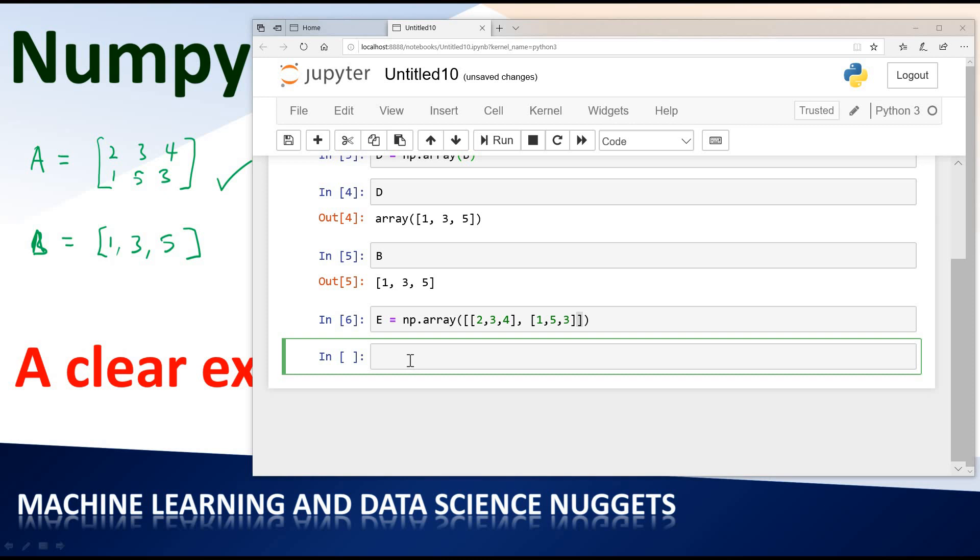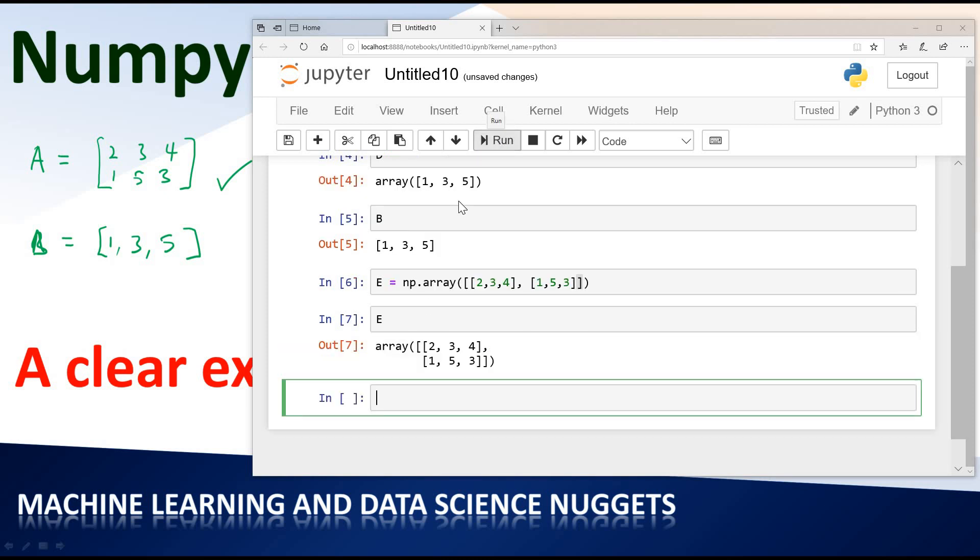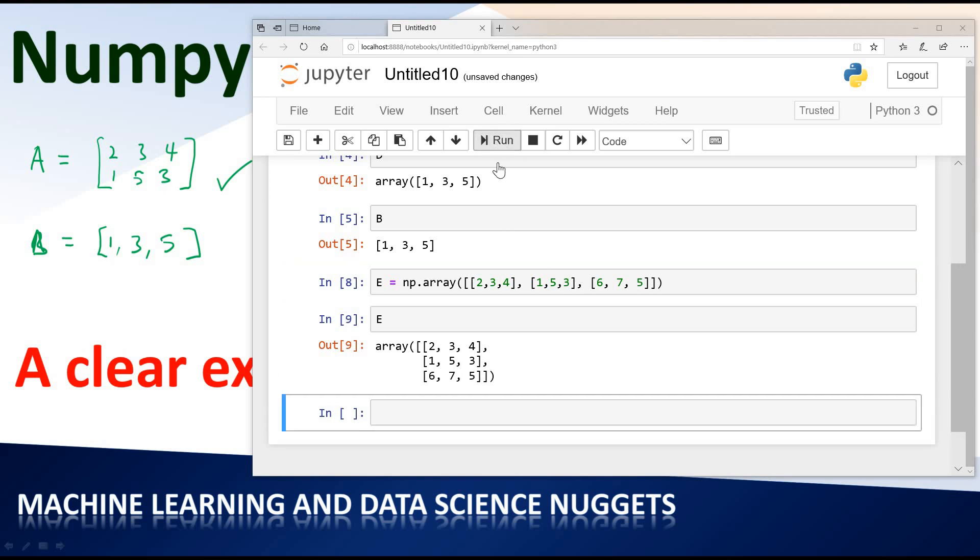If I display it at this point, you can see it displays exactly as a matrix form. Extending it a little further, let's go up and extend it. Let's add a third row, maybe 6, 7, 5. This spacing does not really matter. So now it displays as an array.